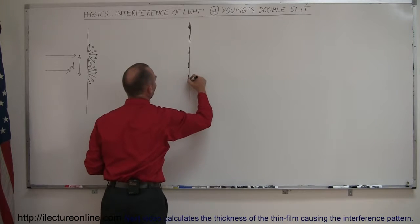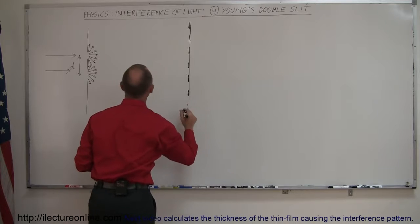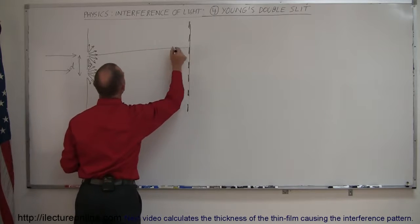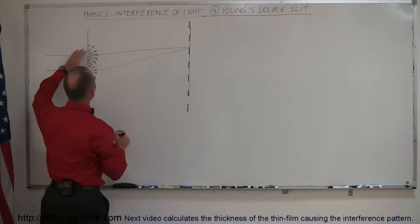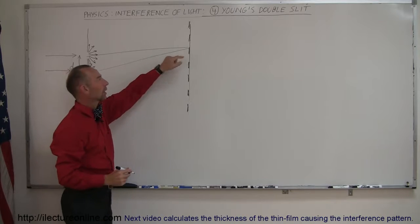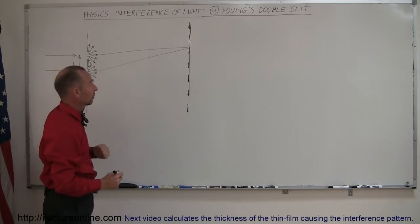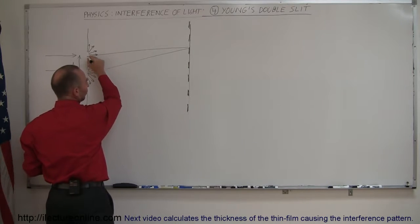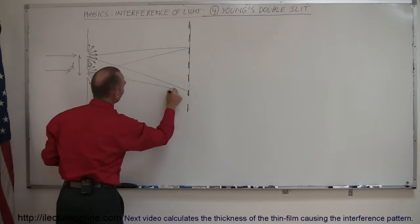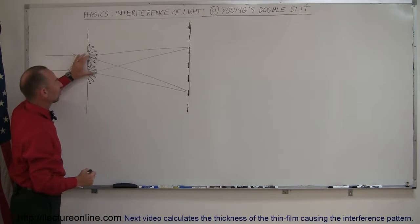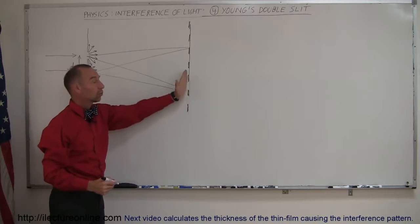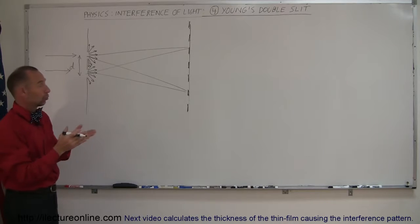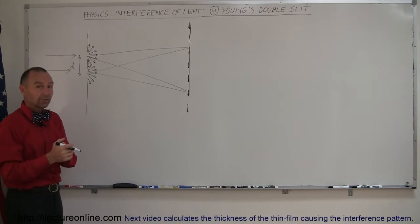No matter where you look on a screen at some distance away — maybe a few meters from the slits — you'll see what we call an interference pattern: sections with bright light, then no light, then bright light and no light. We see these fringes or interference patterns because at some points the light will come together at a single location, and there will be a path length difference to that particular location.